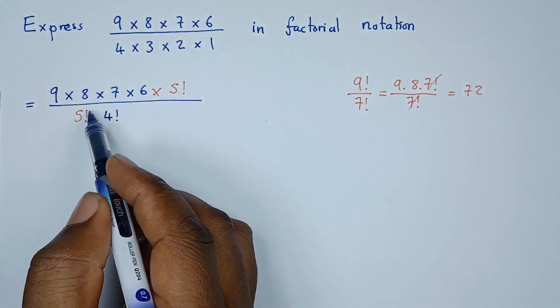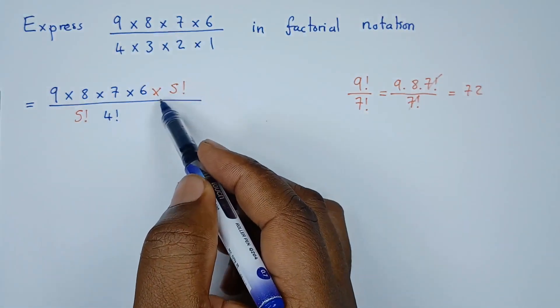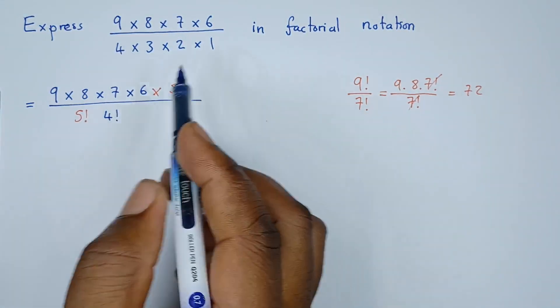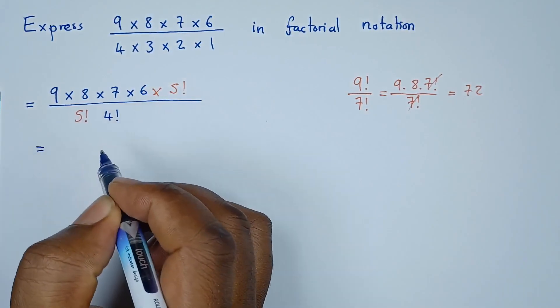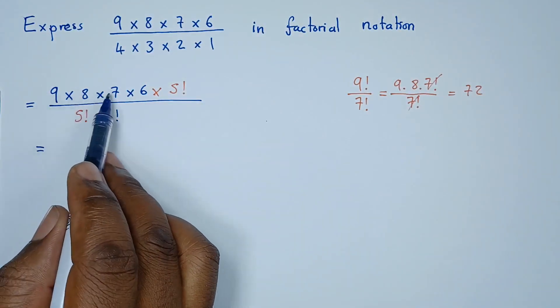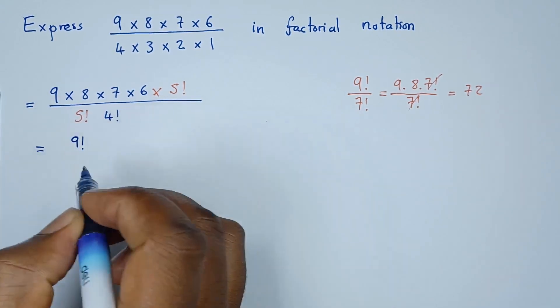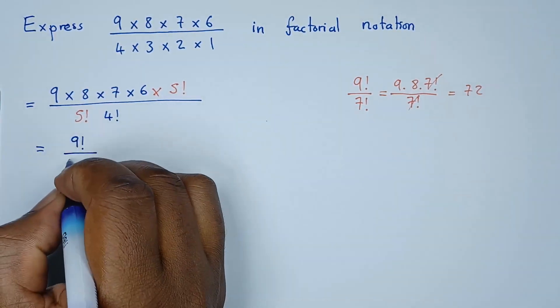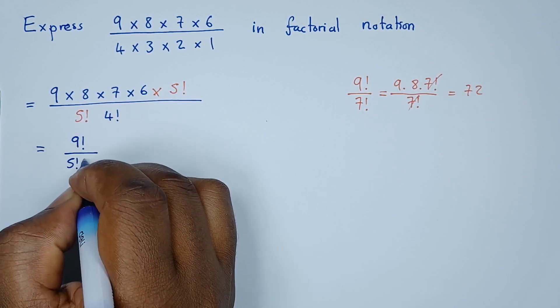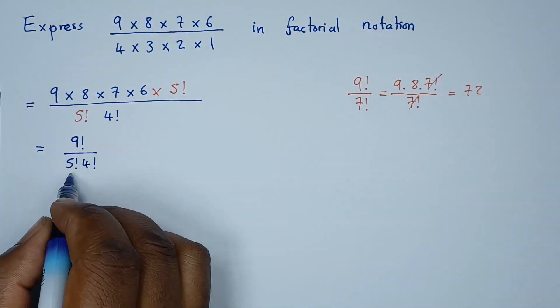So for us to move from here to there, we see 5 factorial cancelled with 5 factorial, then we have 4 factorial. Meaning that what we have here is 9 times 8 times 7 times 6 times 5 factorial, which is just the same as 9 factorial divided by 5 factorial times 4 factorial. So this is our answer.